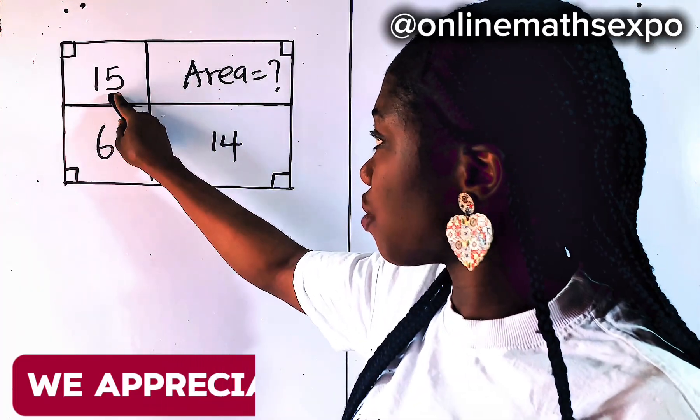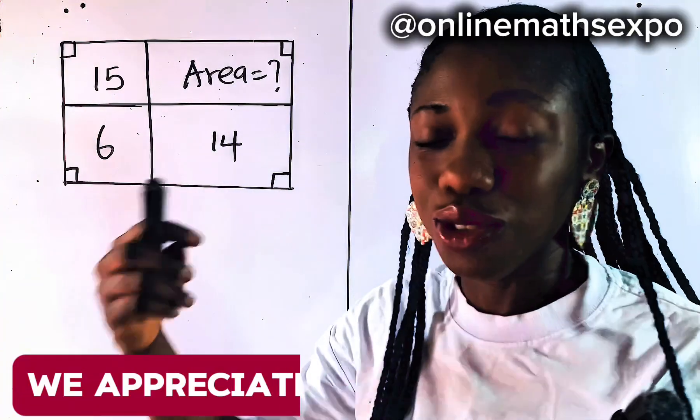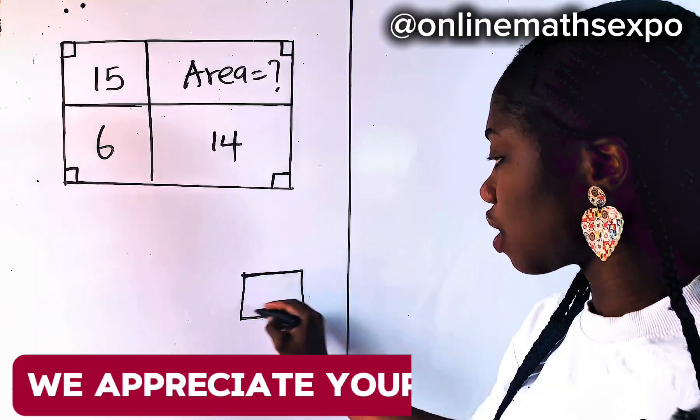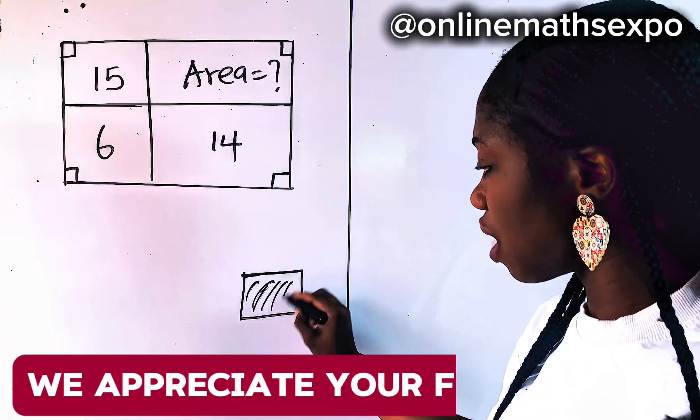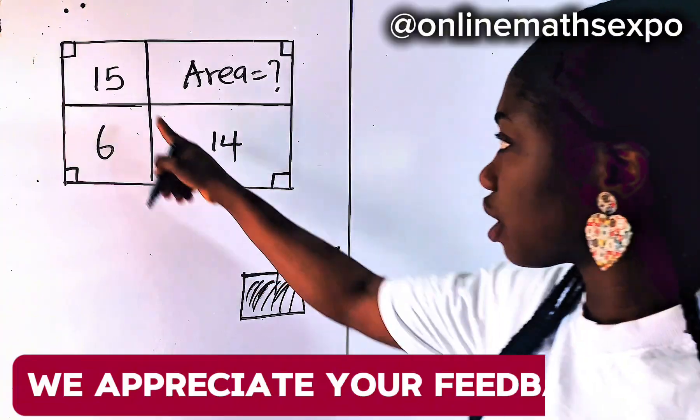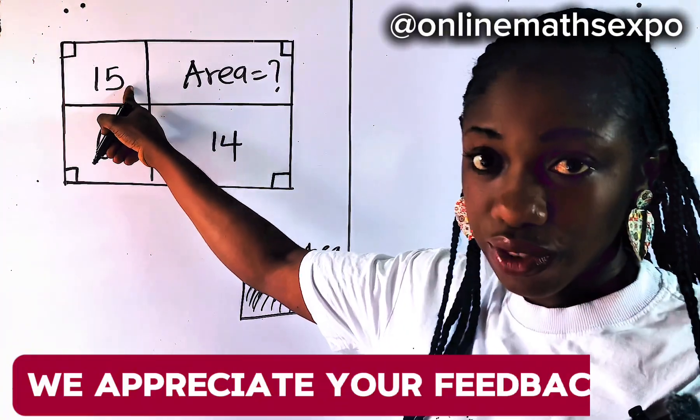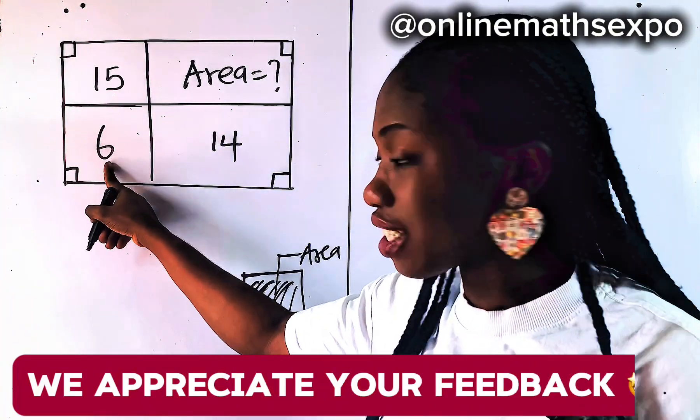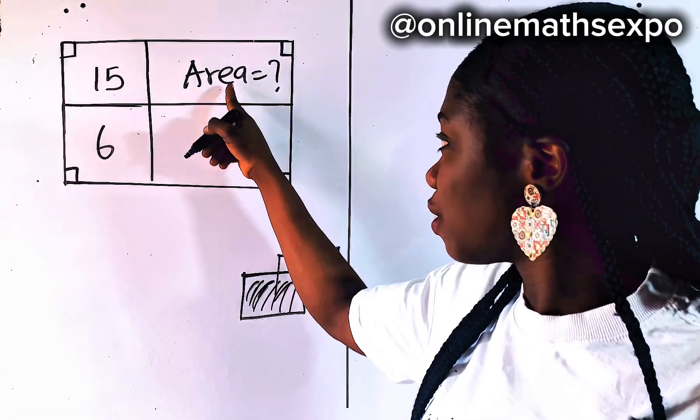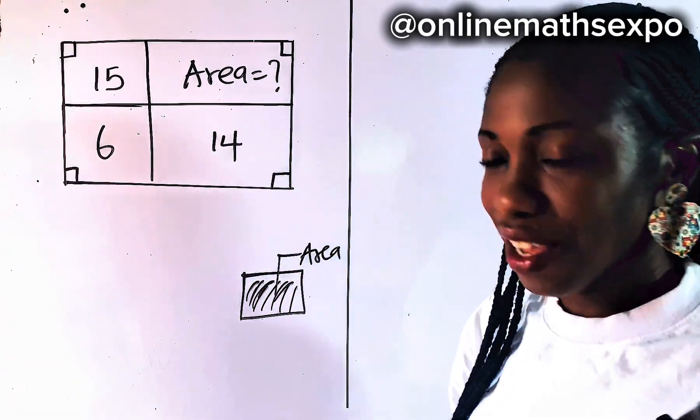And this area is 15. The area, as you know, is the amount of space that any plane shape occupies. So if this is my plane shape, the space inside is what we call the area. So for this, the area is 15 square units. For this, the area is 6. For this, the area is 14. And the question wants us to find this area.